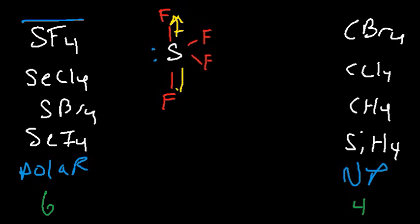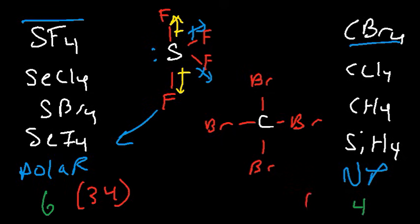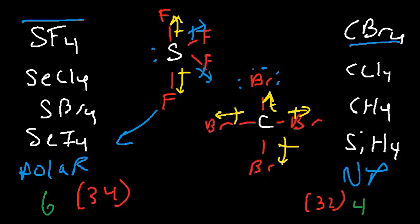In the seesaw shape, some dipole moments cancel but others do not, making the molecule polar. For CBr4, counting valence electrons gives 32, which is a multiple of 8, meaning there are no lone pairs on the central carbon atom. All dipole moments in CBr4 and similar compounds cancel out, making them nonpolar.